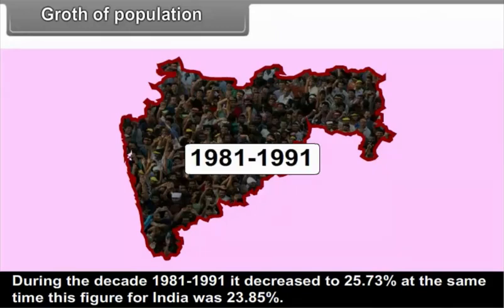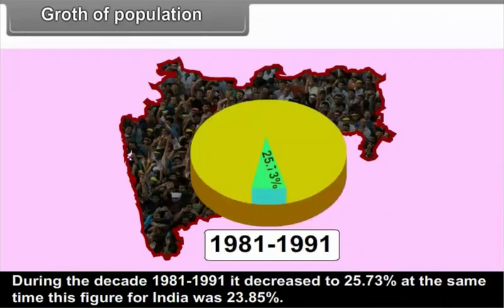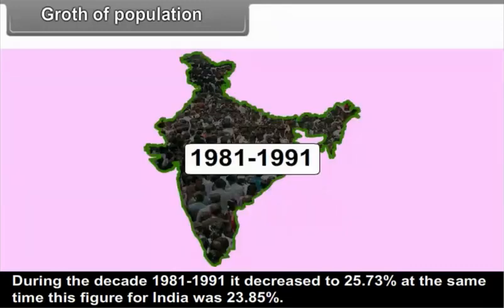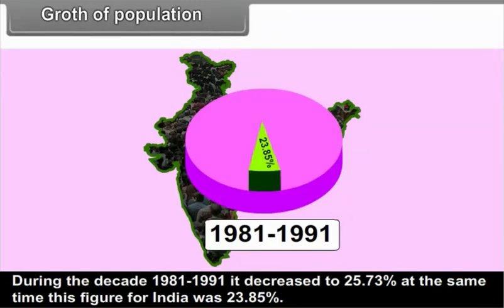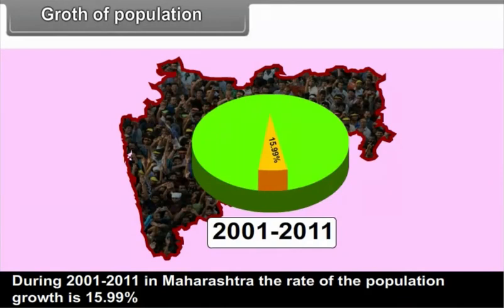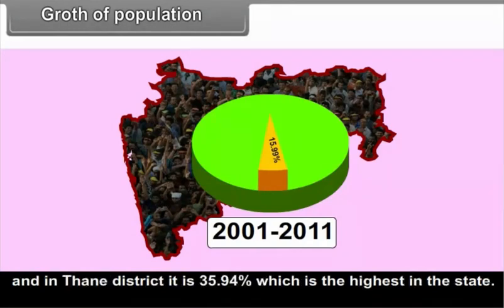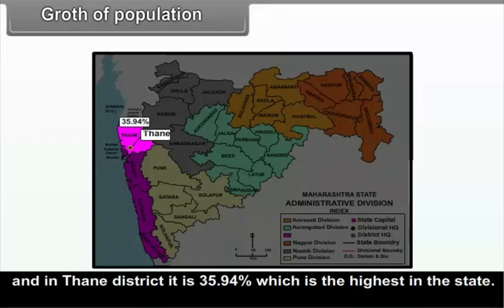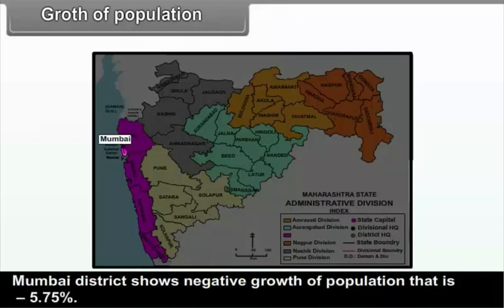During the decade 1981 to 1991, Maharashtra's growth rate decreased to 25.73%, while India's figure was 23.85%. During 2001 to 2011, Maharashtra's rate of population growth is 15.99%. In Thane district it is 35.94%, which is the highest in the state. Mumbai district shows negative growth of population at -5.75% for the first time.